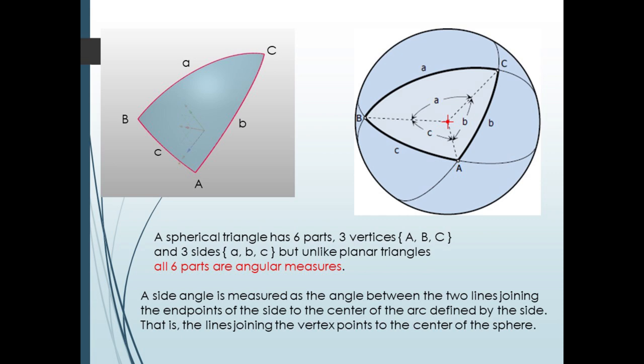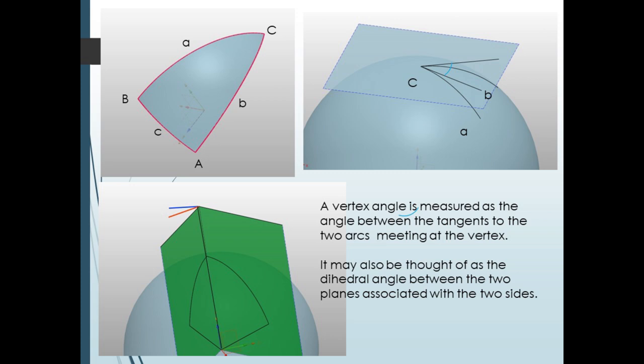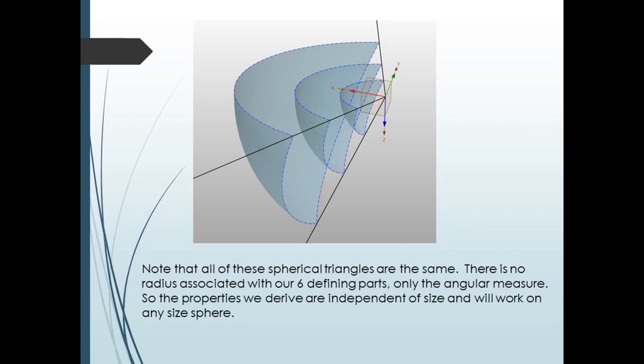The angles at the vertices are measured as the angle between the tangents to the side arcs which meet at the vertex. These two tangents lie in the plane tangent to the sphere at the vertex. Another way to think of this angle is that it's the angle between the two planes corresponding to the two side arcs — this is called the dihedral angle. Note that a spherical triangle does not have a length associated with it, only arc measures.